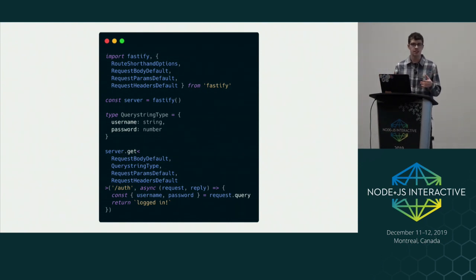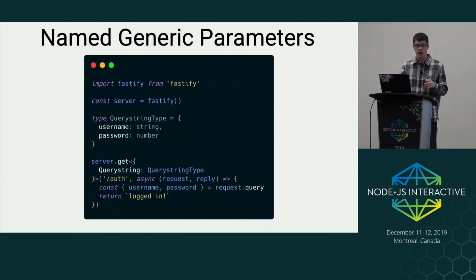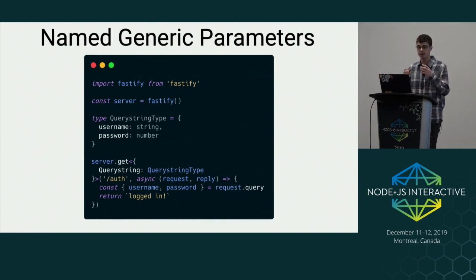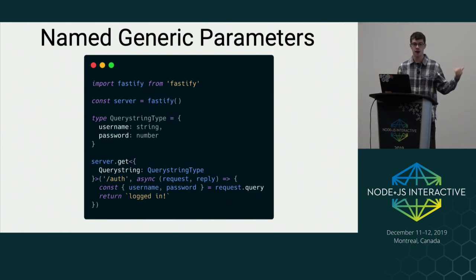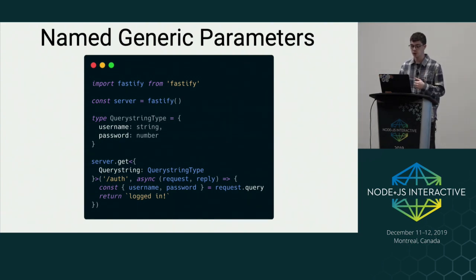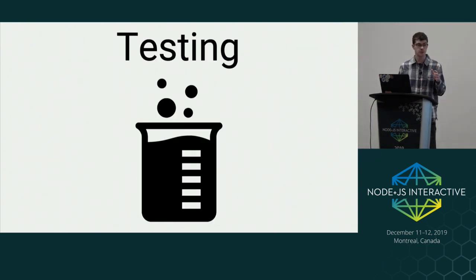If you jump down to the bottom of the code, you'll see server.get where I'm passing in four generic properties — three are defaults, one is custom. One of them is the body, and we're defining a GET route. Why would I ever need to specify the body of a GET request? This is something I realized after building the type system — maybe there's a better way. And in fact there is: named generic parameters. In the JavaScript world, if you define a function with eight arguments, it's better to put them in one object with names. You can do the exact same thing in TypeScript with generics — a singular generic object with named properties. This way, when defining a route with a custom query string, all you have to do is specify the query string, not the body, params, or any custom headers.